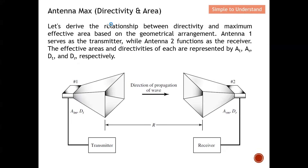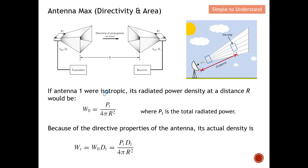Let's derive the relationship between directivity and maximum effective area. Consider the geometrical arrangement with two antennas: antenna one serves as the transmitter and antenna two serves as the receiver. The effective area and directivity of each are represented as A_t, A_r, D_t, and D_r for the transmitter and receiver respectively.